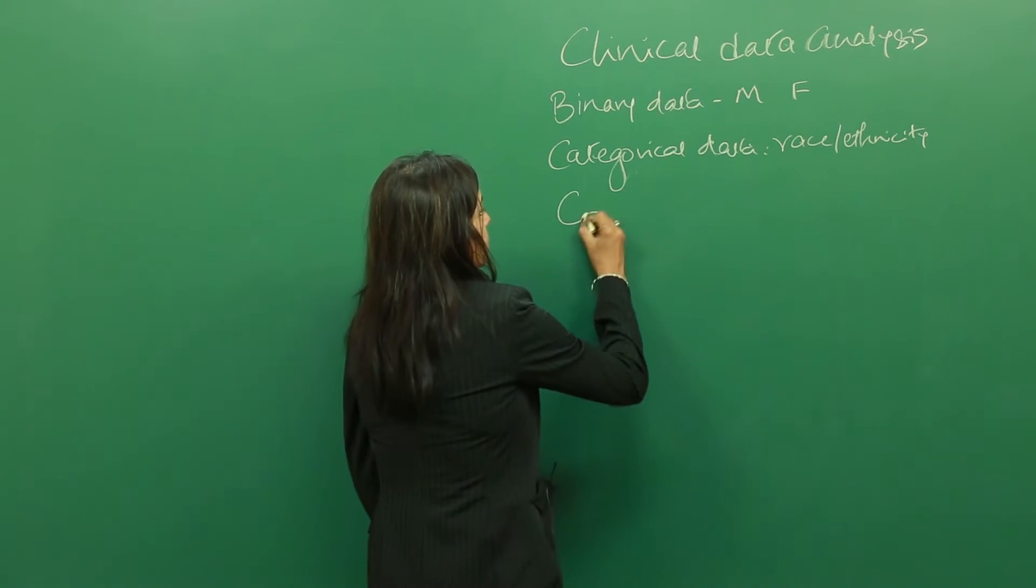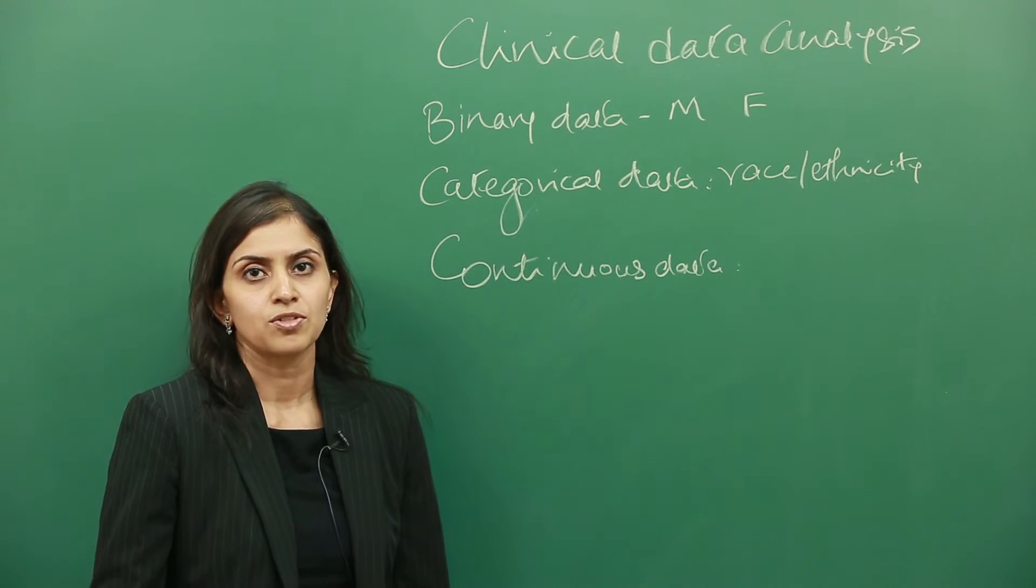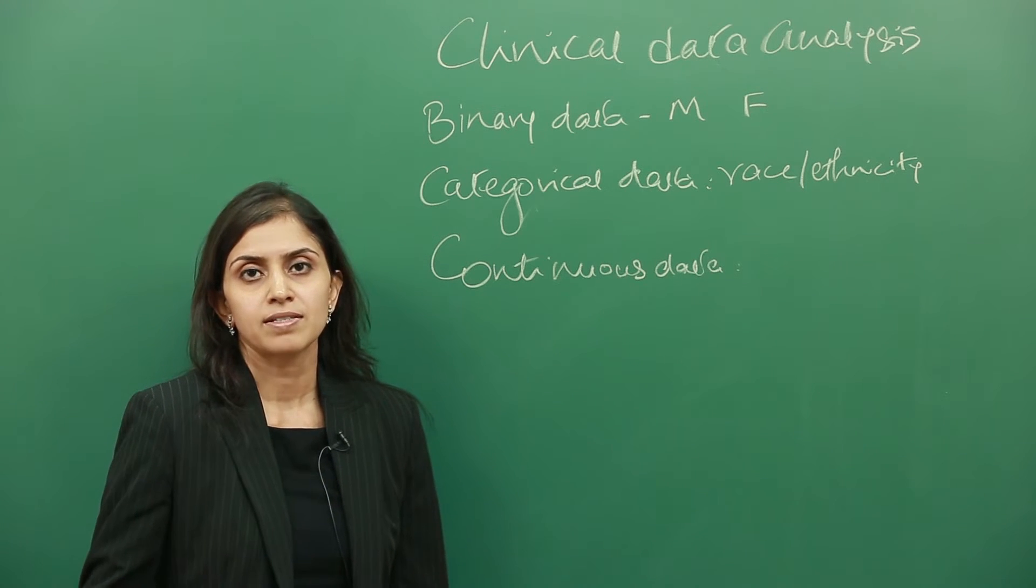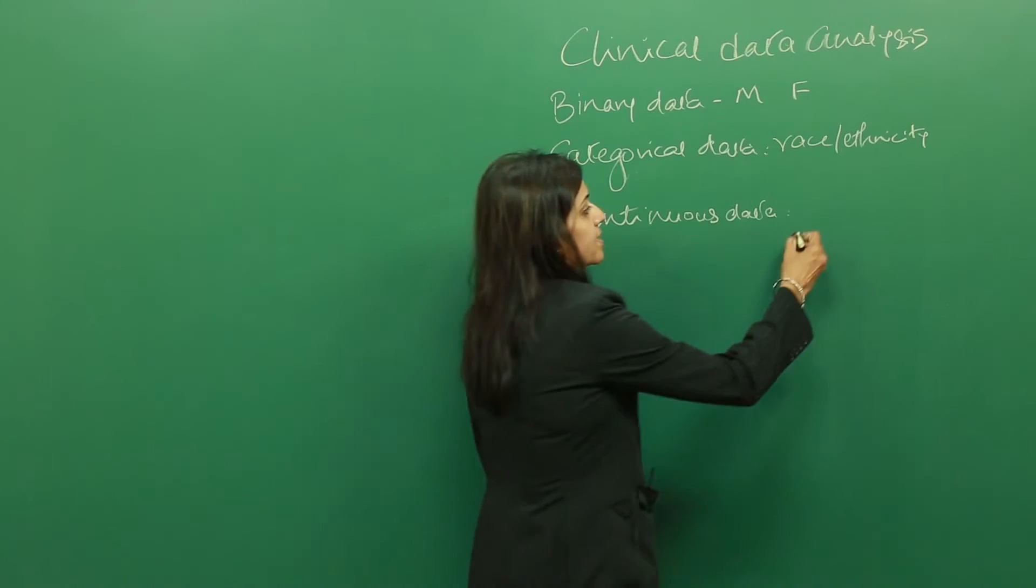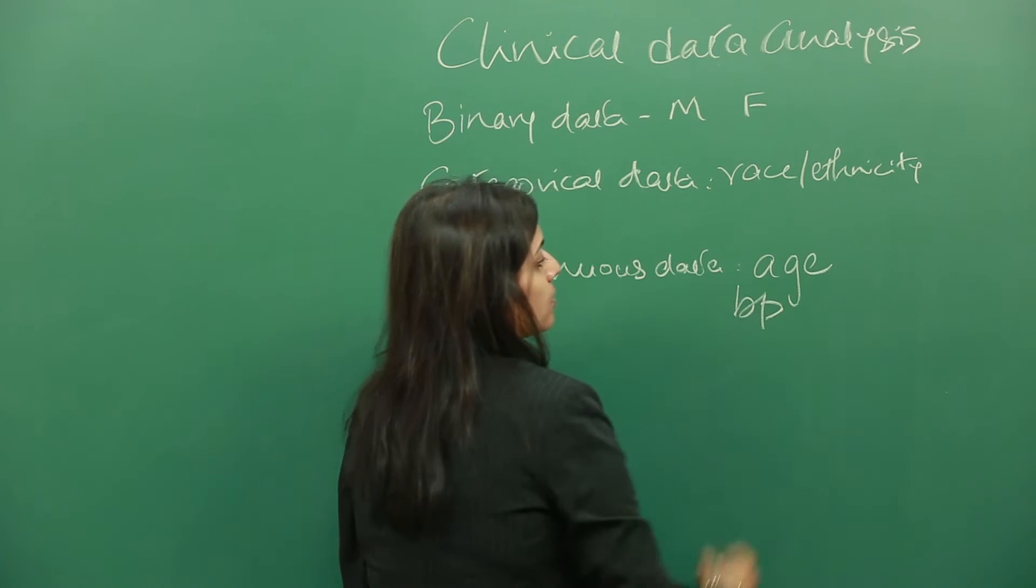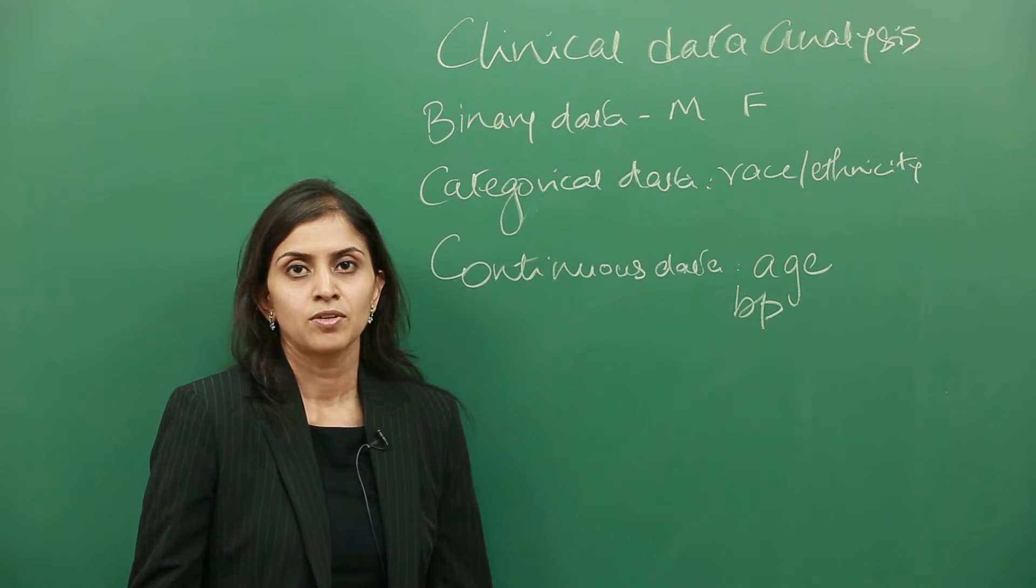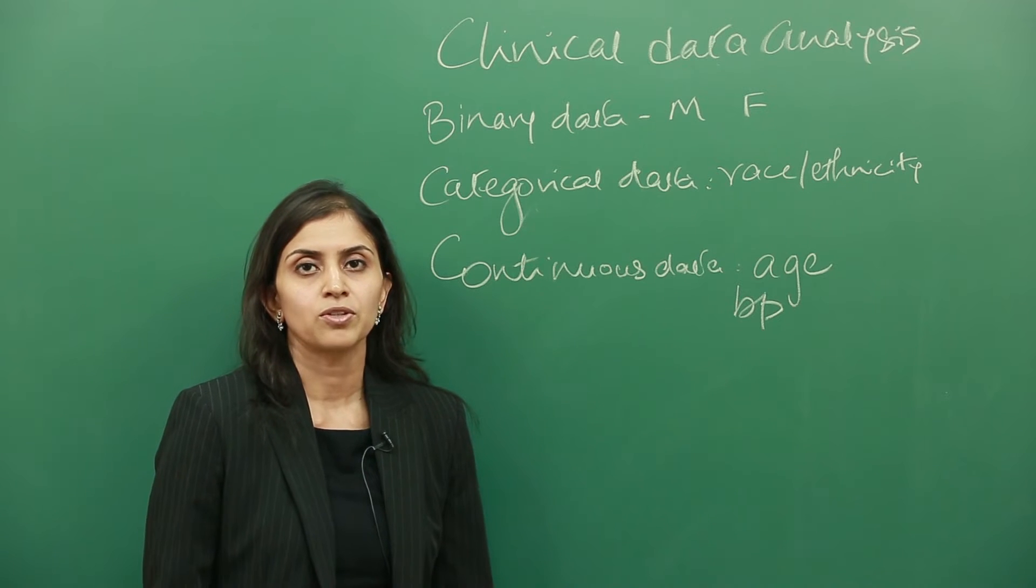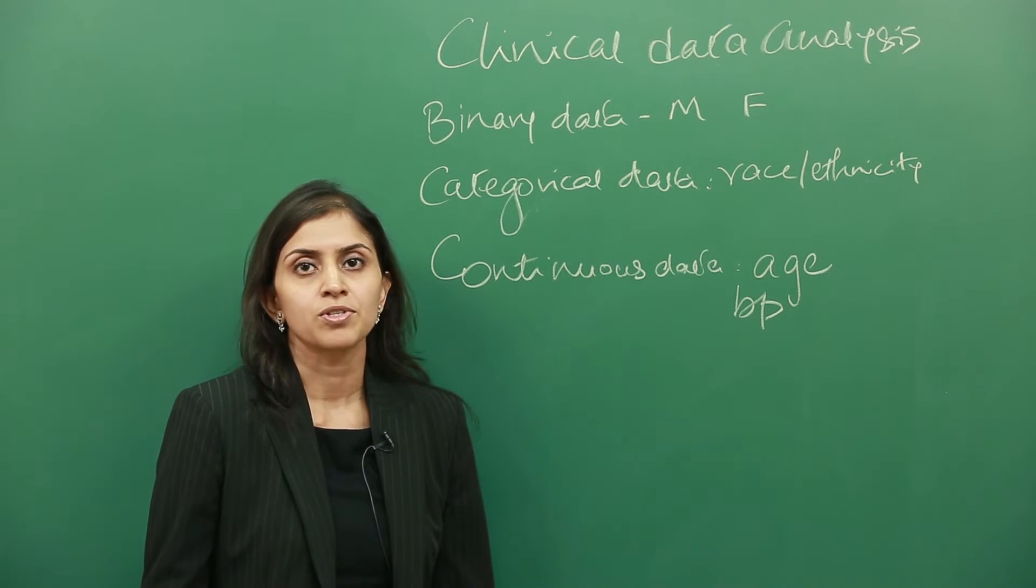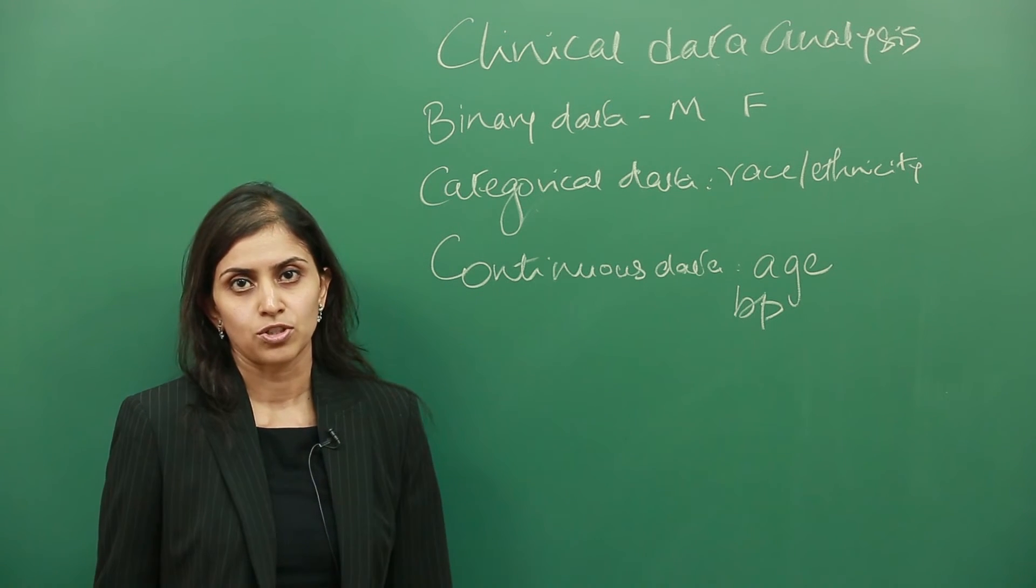Then there is continuous data. Continuous data, as the term suggests, means it is continuous. One variable to one response to the next is the same as the second response to the third. For example, age would be considered continuous data. Blood pressure would be continuous data. In this data, you can have values ranging technically all the way through infinity. For age, we could have it ranging anywhere from 0 to 150. Zero to 1 would mean the exact same thing as 1 to 2.